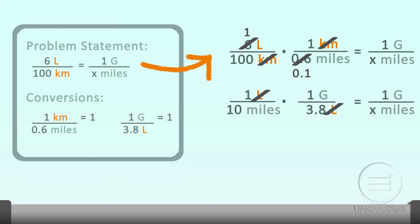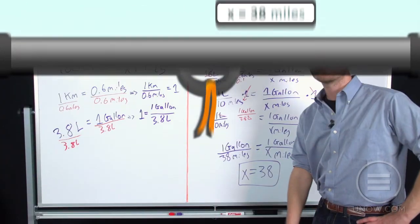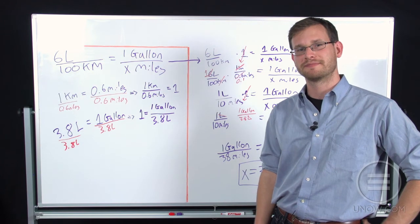So now this is great. Already my units are good. Gallons per mile, gallons per mile. Great. Now I just multiply 10 by 3.8. I get 38. So now I have 1 gallon over 38 miles equals 1 gallon per x miles. And this is exactly what we want. Because remember we said our car can go 100 kilometers per 6 liters. We asked, well how many miles can it go in one gallon? It can go 38 miles in one gallon. And if you wanted, you could cancel the gallons and cancel the miles, and you'd find out that x equals 38. And that's our miles per gallon. And that's our example of a more complicated unit conversion. Great job.